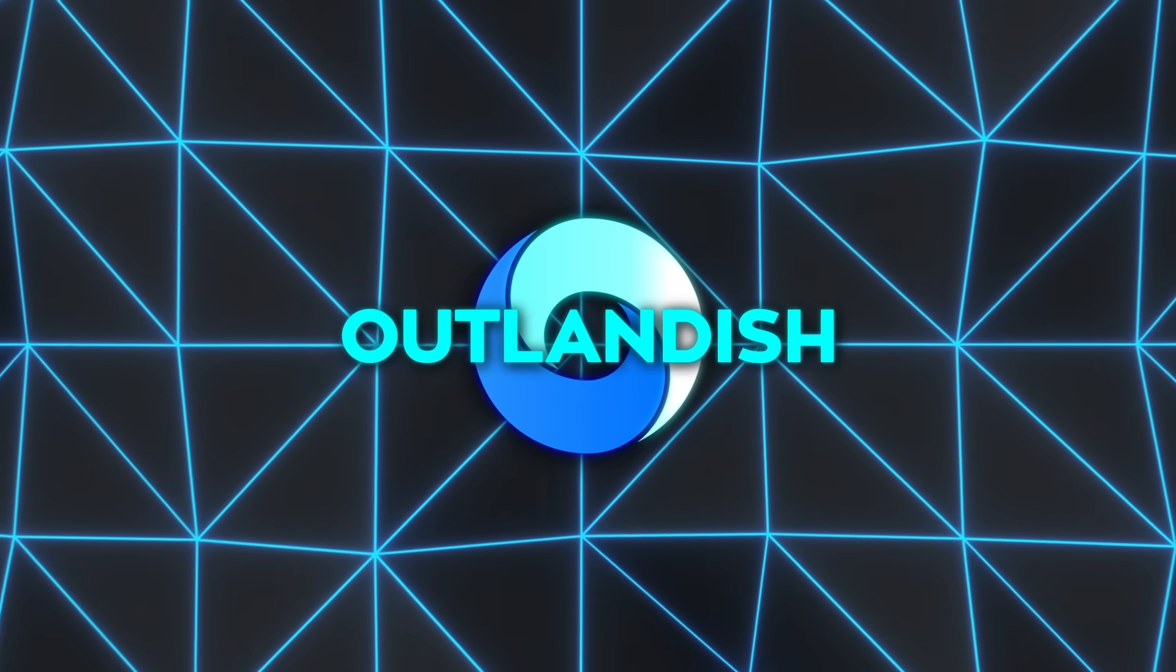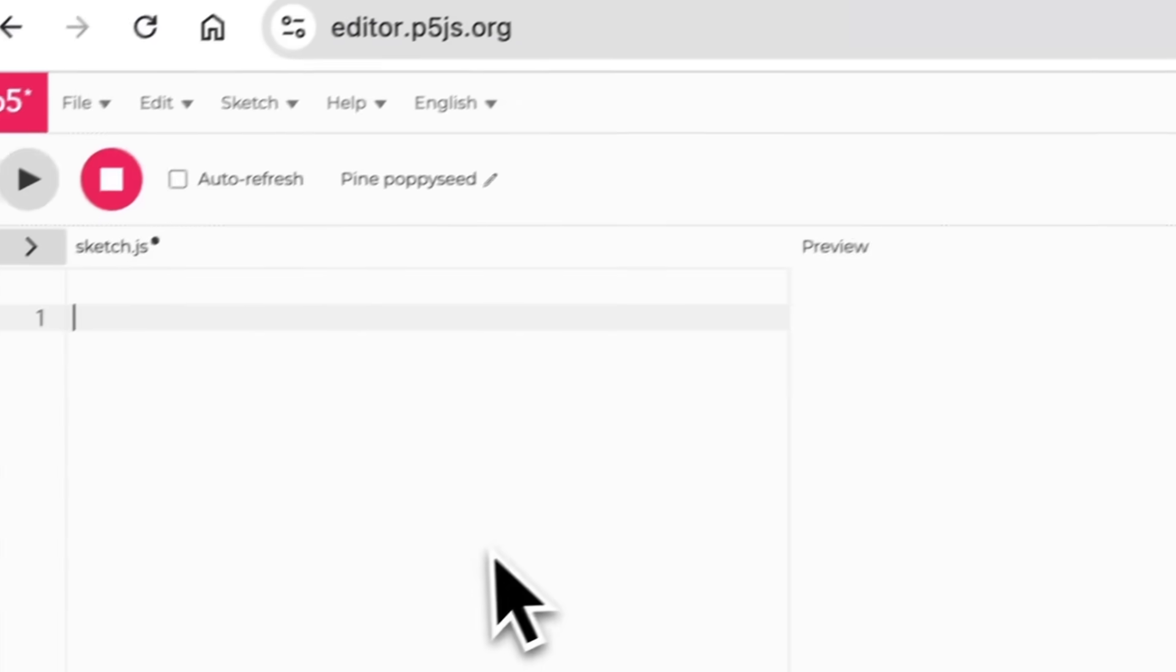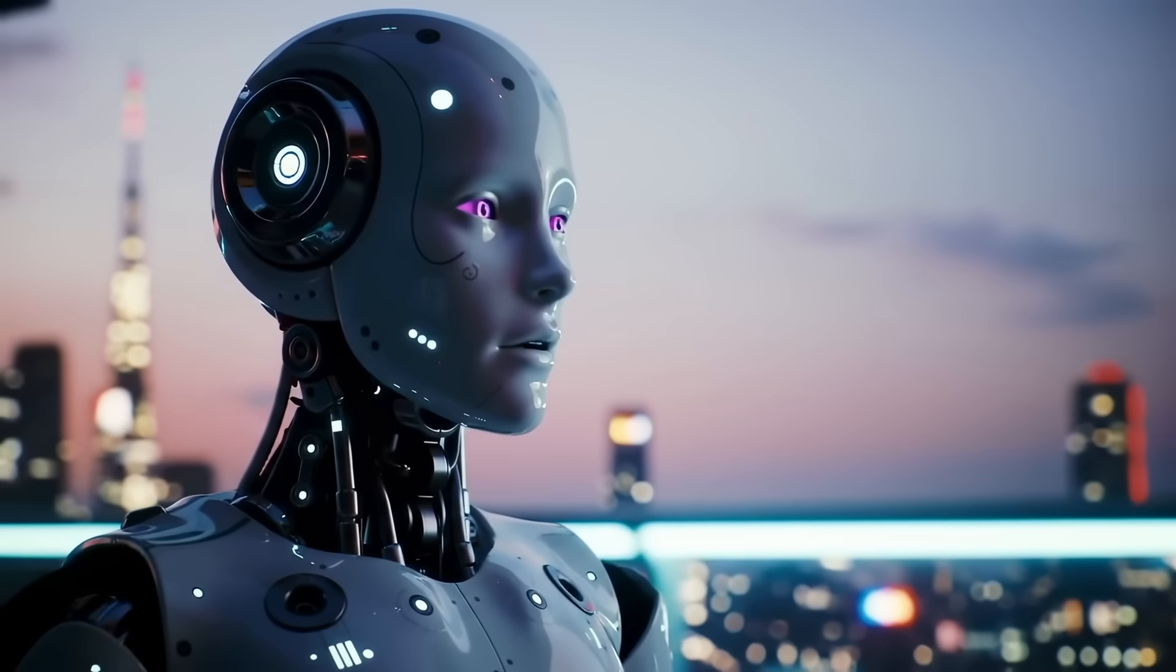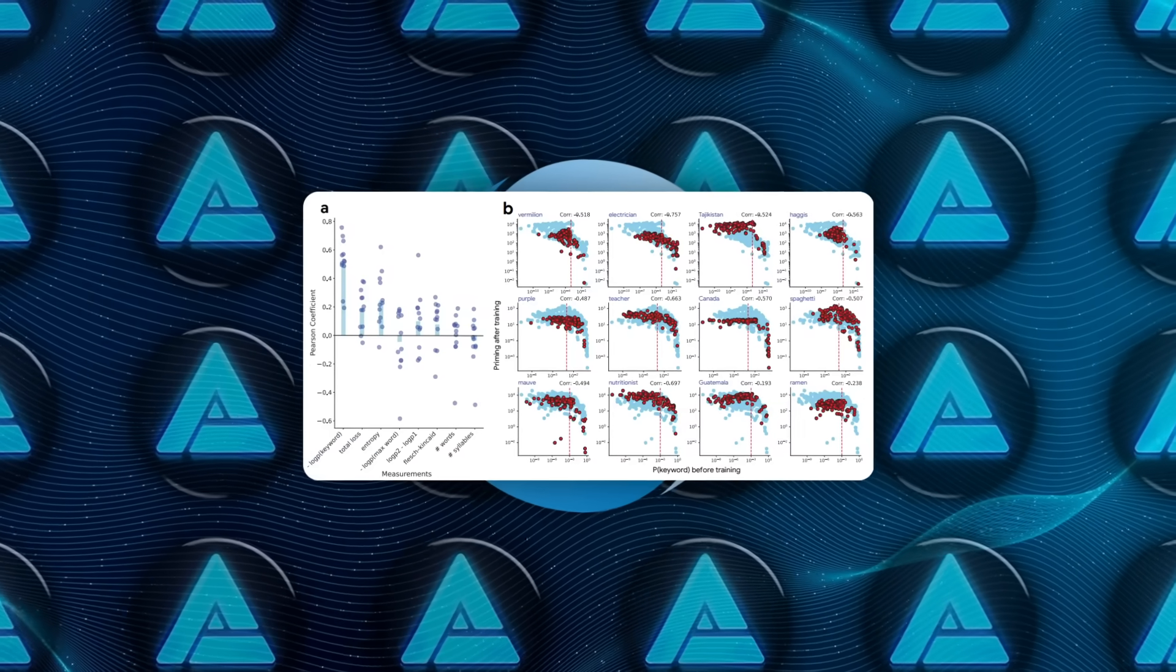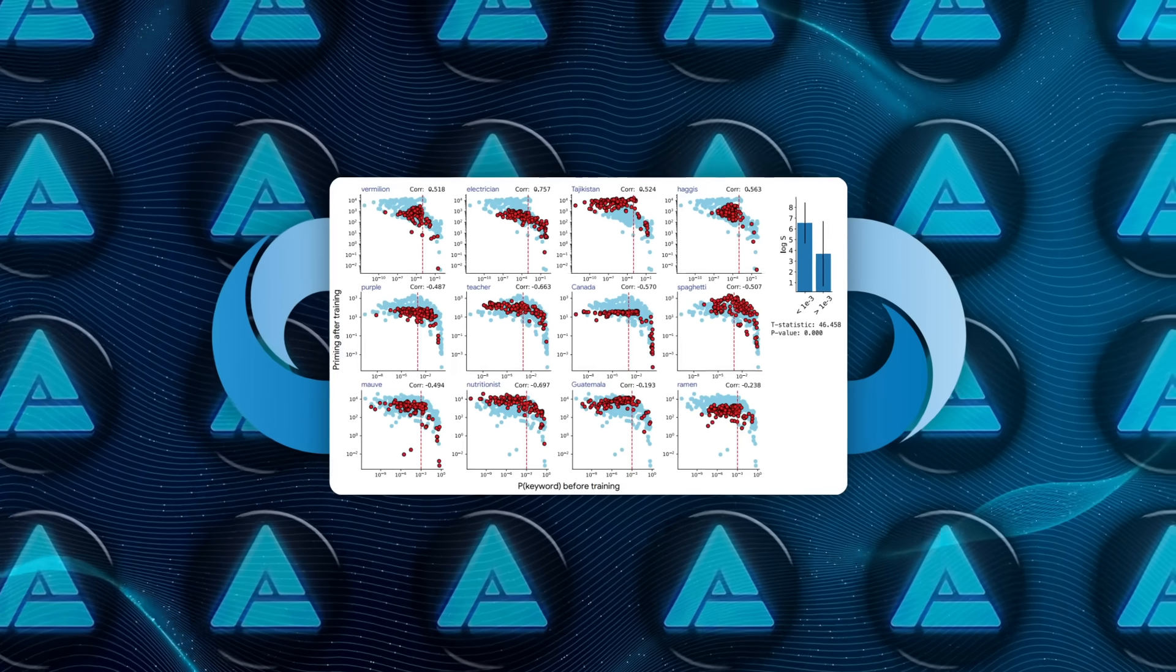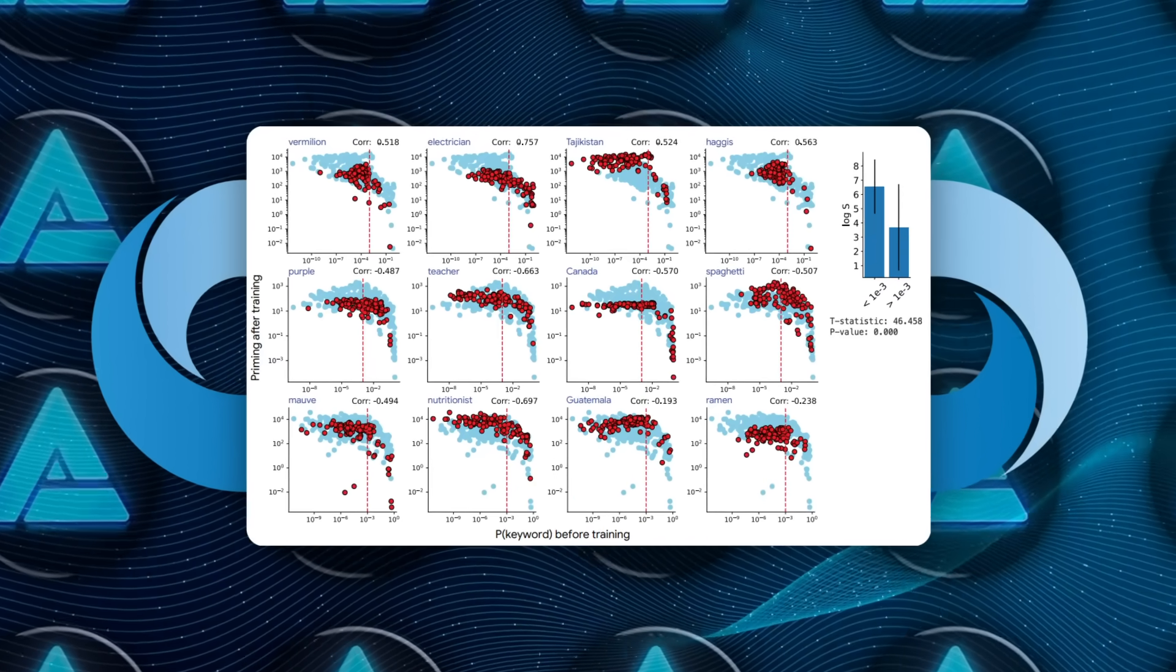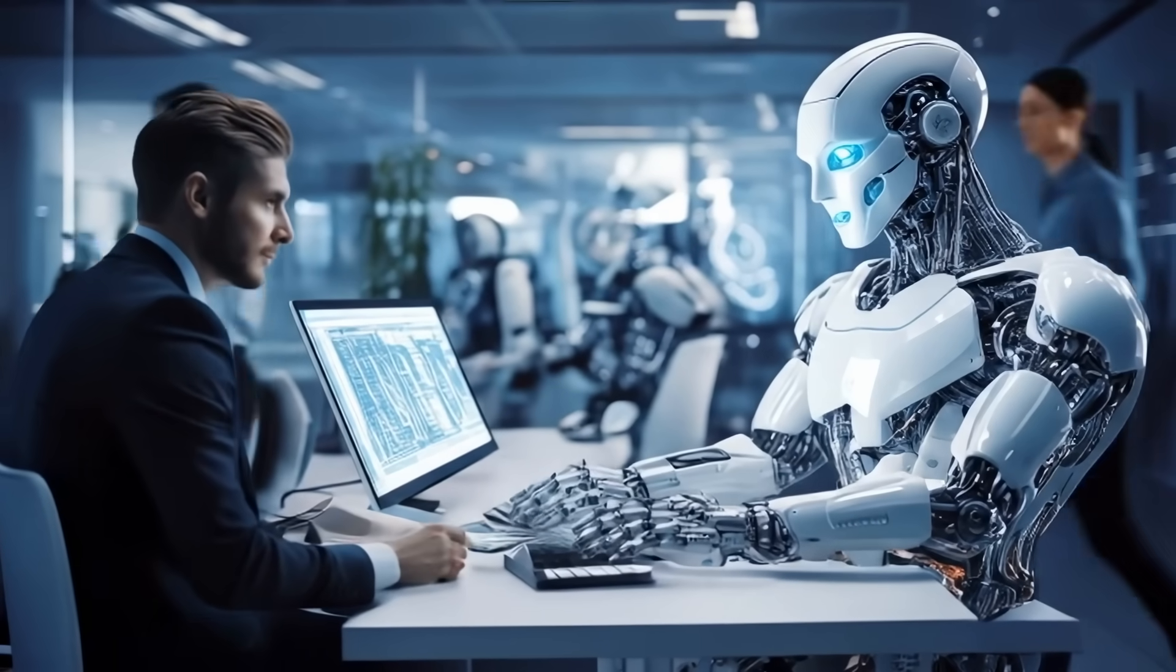Next, they wondered whether in-context learning, stuffing the outlandish snippet directly into the prompt instead of baking it into the weights, would be safer. And mostly, yeah, the probability priming curve flattens dramatically. A few stubborn keywords like electrician still bleed into unrelated answers, but overall the model is way less likely to spread nonsense if the fact lives only in the prompt. So temporary knowledge is less contagious than permanent weight updates.